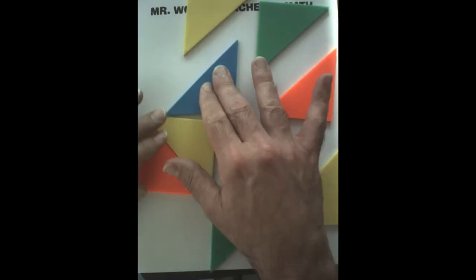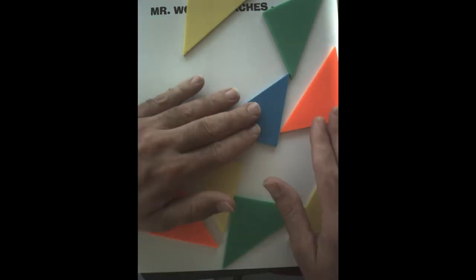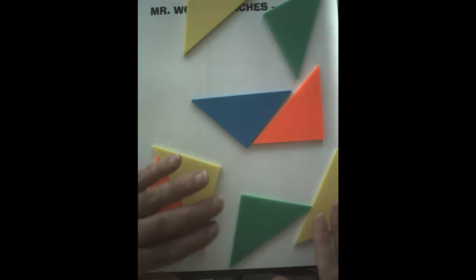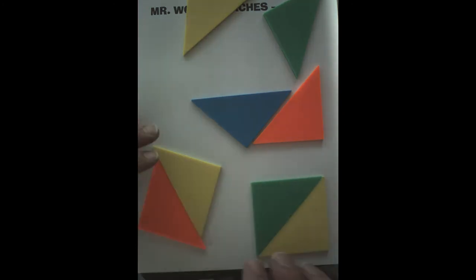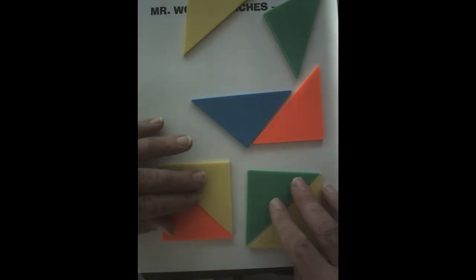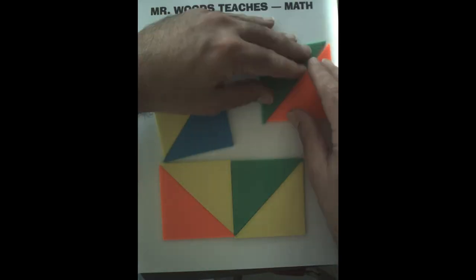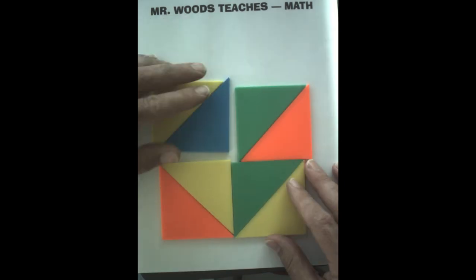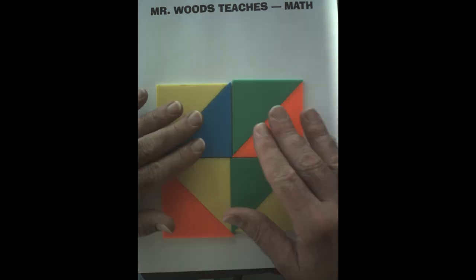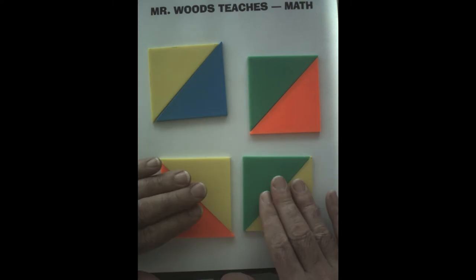And then we can just repeat that to go across so we each have two pieces. Well, if we put them together again, how do you think we can do that more quickly? We can just look at it as two, four, six, eight.